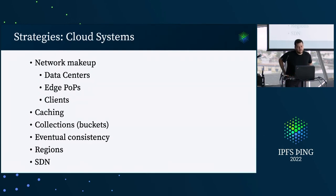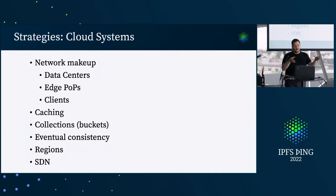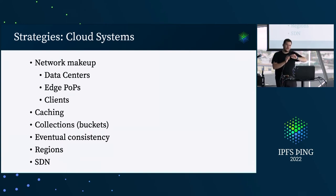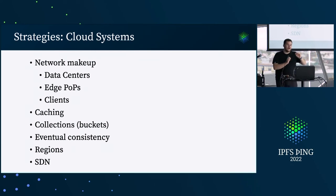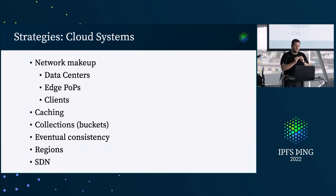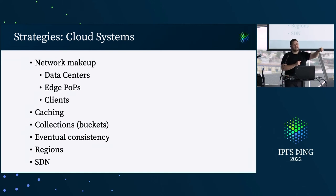Let's look at a few strategies from different classes of systems. The cloud settled around a network makeup of having data centers per region with a ton of machines within single data centers, and they use those data centers to serve the content and applications for a particular region. They have a set of edge points of presence in ISPs following the internet grapevine to get close to users — those points of presence tend to be for read-only caches, so CDN content. Nowadays we're starting to see applications being put all the way to the edge — things like Cloudflare Workers — except once you do that, you have to think of consistency going from edge to edge. It turns out a lot of distributed systems solutions from data center to data center work just fine edge to edge.